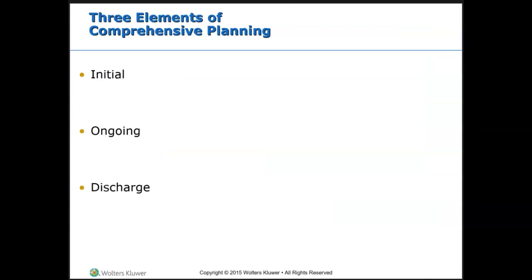Initial planning is done by the nurse completing the admission interview and physical assessment. Standardized care plans have been developed as an assistive tool for nurses, but please remember you still need to individualize these care plans. These are usually computer-generated at hospitals, SNFs, ALFs, home health, and hospice. You take those outlines and map them to your current patient, making them more individualized. Ongoing planning is carried out by any nurse caring for that patient — this keeps the plan of care current and relevant. You may need to clarify some diagnoses, add new ones, adjust outcomes, or identify new nursing interventions.